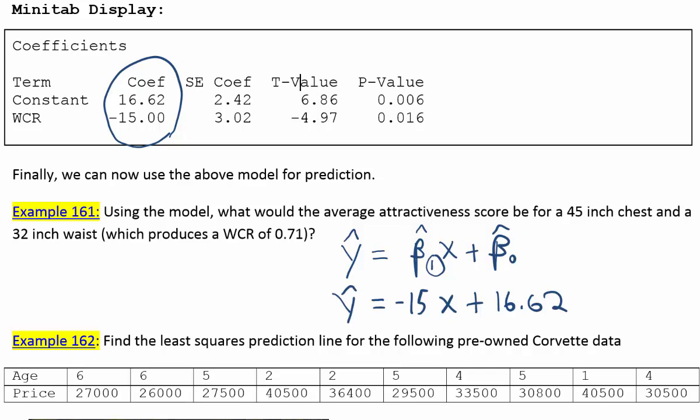Alright, so there's our model, and if we want to use our model, all we have to do then is to plug this waist-to-chest ratio in for x in the model. So that will be y-hat is equal to negative 15 times 0.71 plus 16.62.